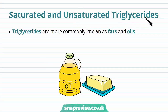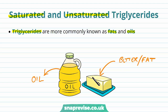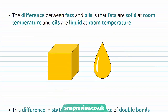Any triglyceride molecule can be described as being either saturated or unsaturated. Commonly we call triglycerides either fats or oils — these are the names that generally refer to them in a non-scientific way. Oils tend to be liquid fats, for example olive oil, whereas fats tend to be things like butter or margarine and take on a solid form. The main difference is that fats are mainly solid at room temperature and oils tend to be liquid at room temperature.